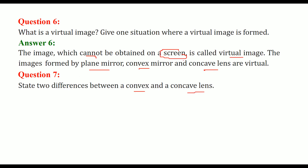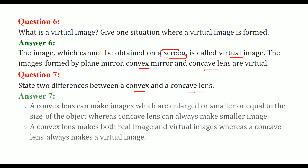Difference between convex and concave lens: A convex lens can form images that are enlarged, or equal to, or smaller than the size of the object. In the case of a concave lens, the image is always smaller in size. Second difference: a convex lens can make both real and virtual images, while a concave lens only makes virtual images.